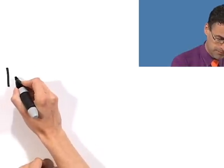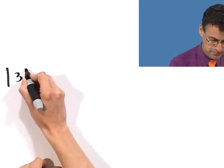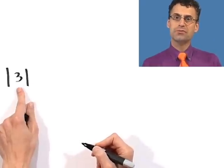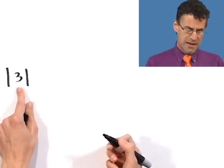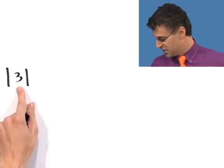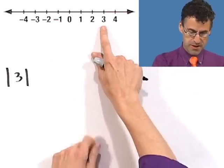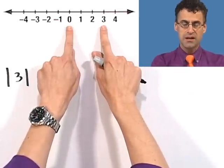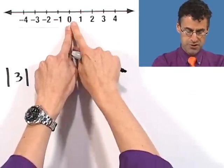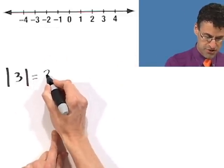Let me show you how we write these things — it's really kind of cool. We use these vertical symbols like this. What this means is the absolute value of three. It basically means the distance three is away from zero. If you think about a number line, here's three and here's zero — what's the distance away? If you measured it with a little ruler, you'd see it's three units. So the absolute value of three is just three.